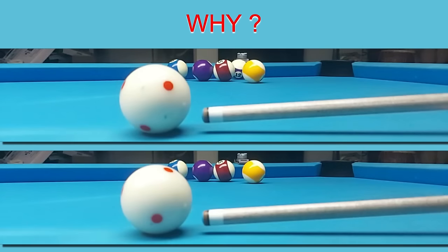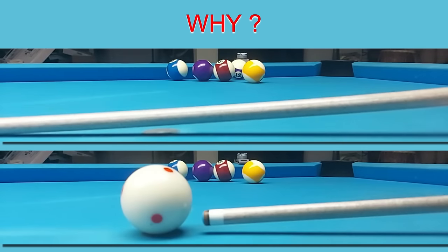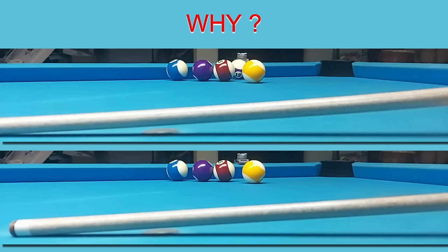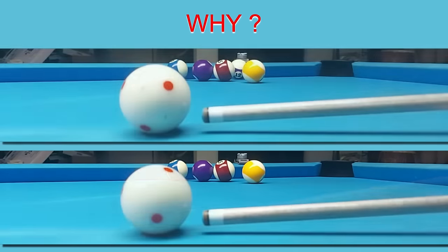Let's compare two draw shots. First, on top is a normal draw shot. Then below, what looks like the same stroke results in a miscue. Did you catch the difference? Let's look again in slow motion.